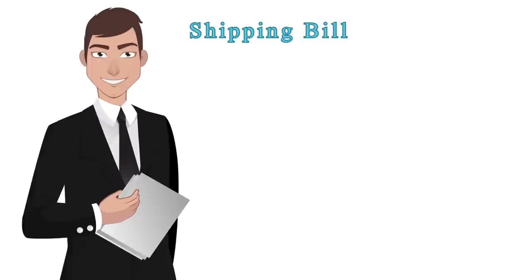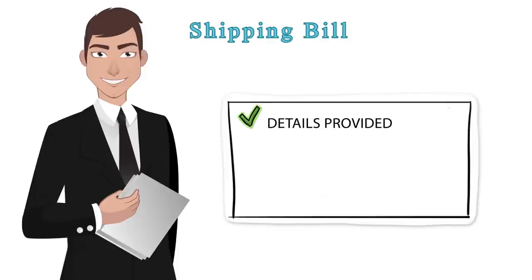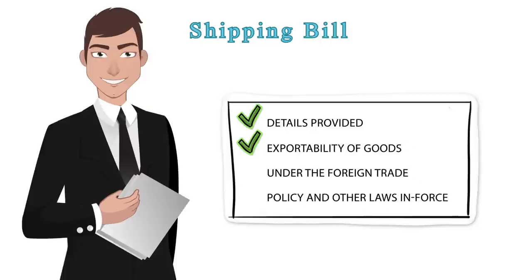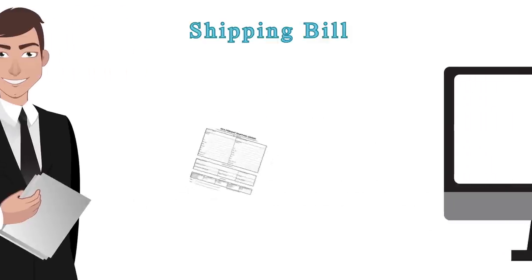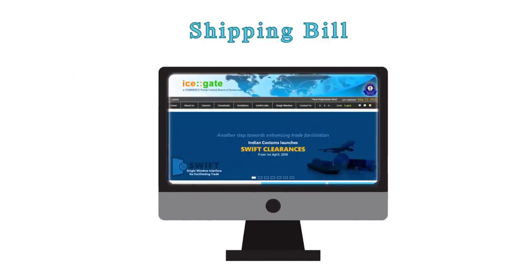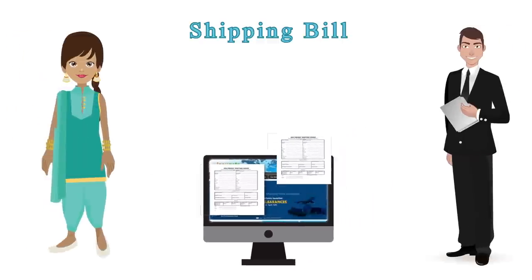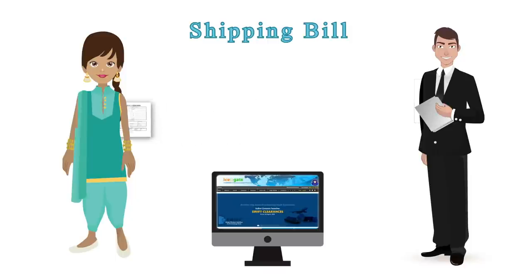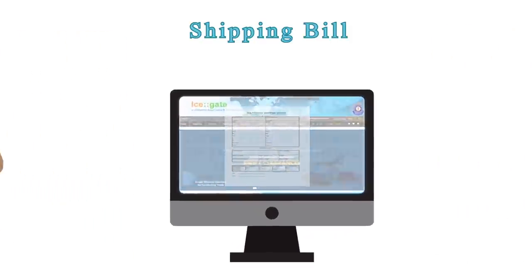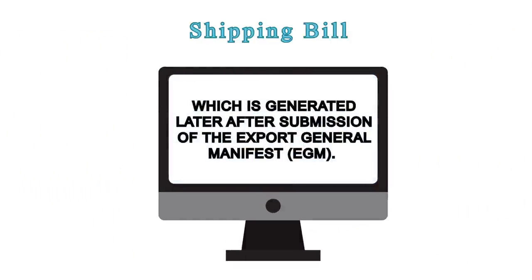The assessing officer in the export department checks the details provided and the exportability of goods under the foreign trade policy and other laws in force. After the LET Export order is given by the customs officer, the shipping bill is generated by the system in two copies: one customs copy and one exporter's copy. There is a third copy, the EP copy, which is generated later after submission of the Export General Manifest (EGM).